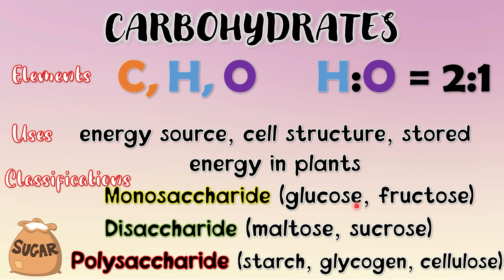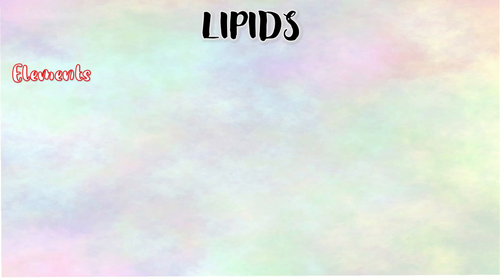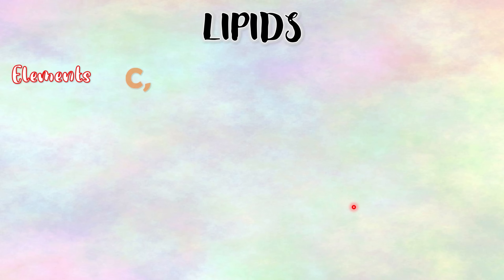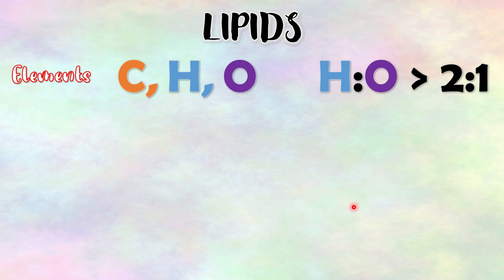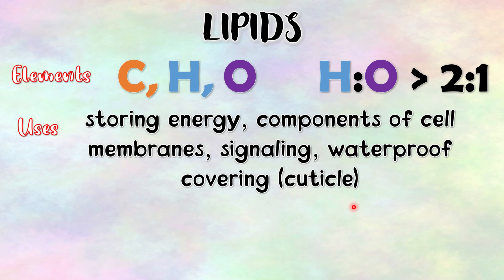That is all for carbohydrates. Next is lipids. Lipids are also made up of carbon, hydrogen, and oxygen, just like carbohydrates. Their difference is that the ratio of hydrogen to oxygen is greater than 2 to 1. The uses of lipids include storing energy, acting as structural components of cell membranes to help them become flexible and fluid-like, serving as signal molecules to help cells communicate, and their coating called cuticle makes them waterproof and protects them from elements.